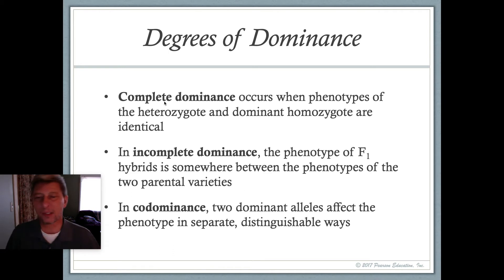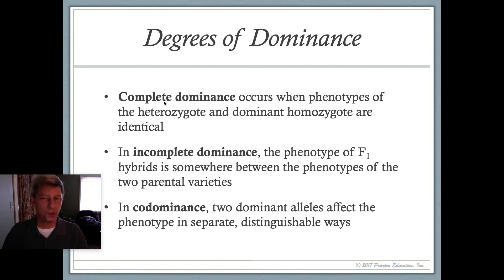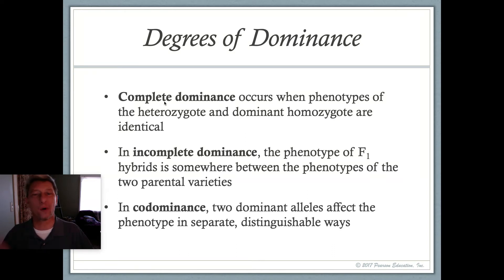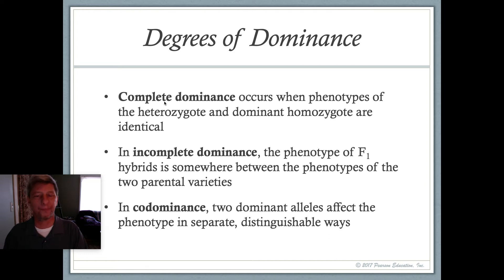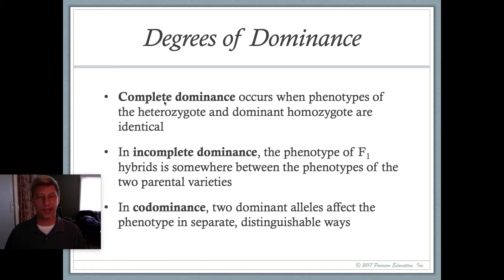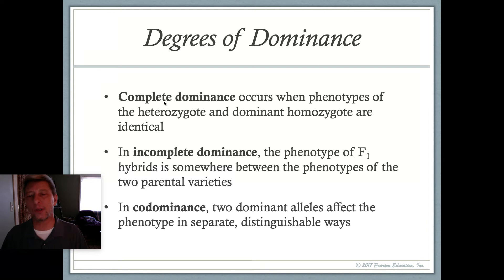In incomplete dominance, the phenotype of the F1 hybrids is somewhere in between the two parental types. So a red flower and a white flower might give rise to an F1 generation that is pink — red and white make pink. In co-dominance, the last kind, two dominant alleles can affect the phenotype in separate, distinguishable ways.